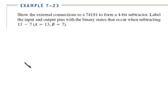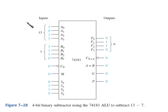The best way to learn how the 74181 works is to run an example. In example 723 we're going to show the external connections to the chip to form a 4-bit subtractor. We're going to label the input/output pins with the binary states that occur when subtracting 13 minus 7. Here are the inputs and outputs. The bluish cyan color are the inputs we're going to apply, and the outputs are also listed out here on the right hand side.